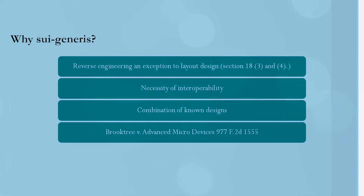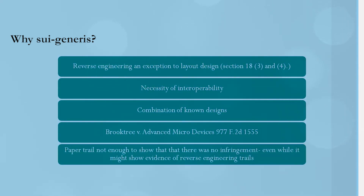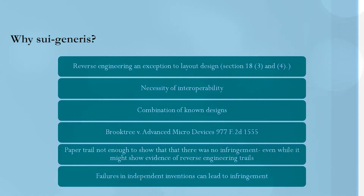In Brooktree v. Advanced Micro Devices, the court concluded that a paper trail alone was not enough to show there was no infringement, even while it might show evidence of reverse engineering. This means that maintaining a paper trail during reverse engineering trials is not sufficient to establish that no infringement occurred. Infringement must be judged in the context of whether there was actual copying. Failures in independent invention can also lead to infringement, akin to patent protection — and similar logic is applied in the context of semiconductor chip protection.